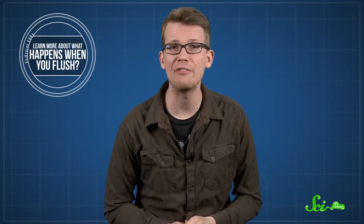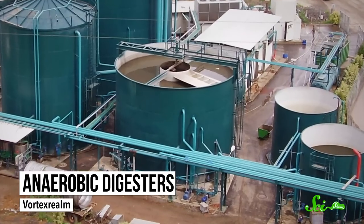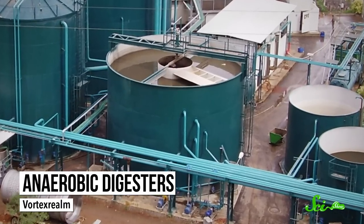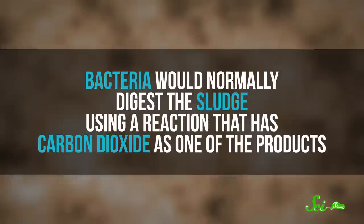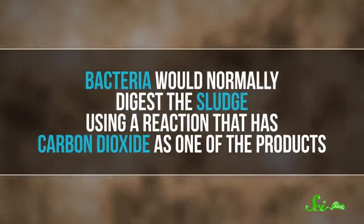At first, cities decided to take advantage of existing sewage treatment systems. We've talked here on SciShow about where the stuff in your toilet and sink goes after you flush, and eventually, part of it ends up in an anaerobic digester. Basically, just a giant tank full of sludge and some specially selected microorganisms, but very little oxygen. Bacteria would normally digest that sludge using a reaction that has carbon dioxide as one of the products. But making carbon dioxide requires oxygen, and when there isn't enough around, they have to do the best they can with what they have.